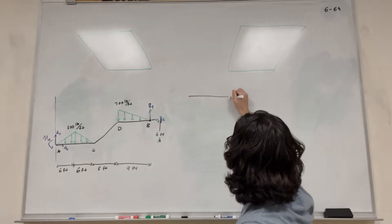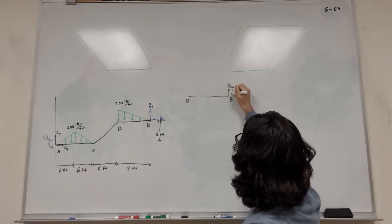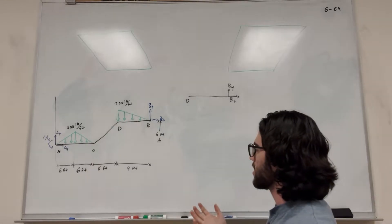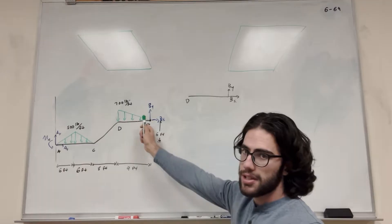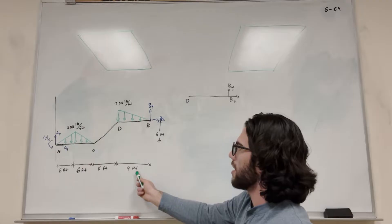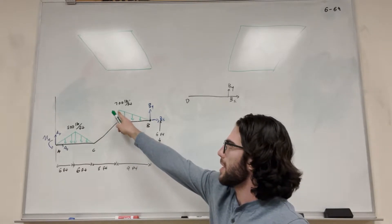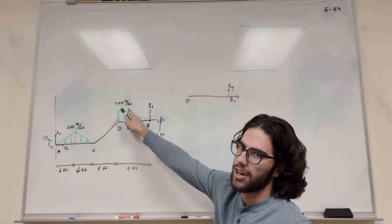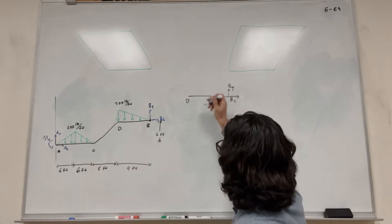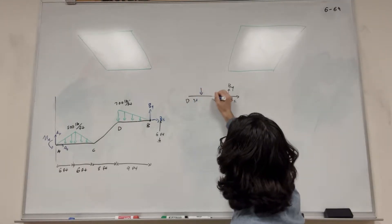So we're going to have — this is B, this is D. We have B of Y, B of X, and then we have this distributed load. Let's go ahead and simplify this distributed load. It's a triangle, so we want to simplify it to one force. If this is nine meters long, it's going to act a third of the way down from the top of the triangle — so three feet from the top, leaving six feet below. Let's label this: three feet and six feet.